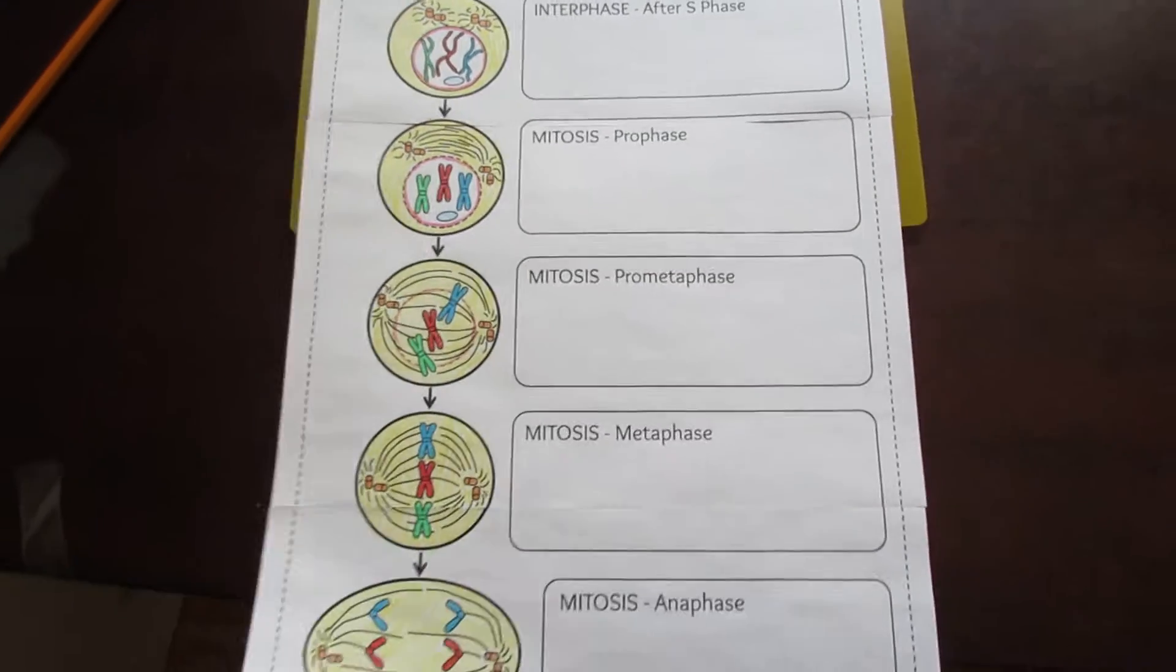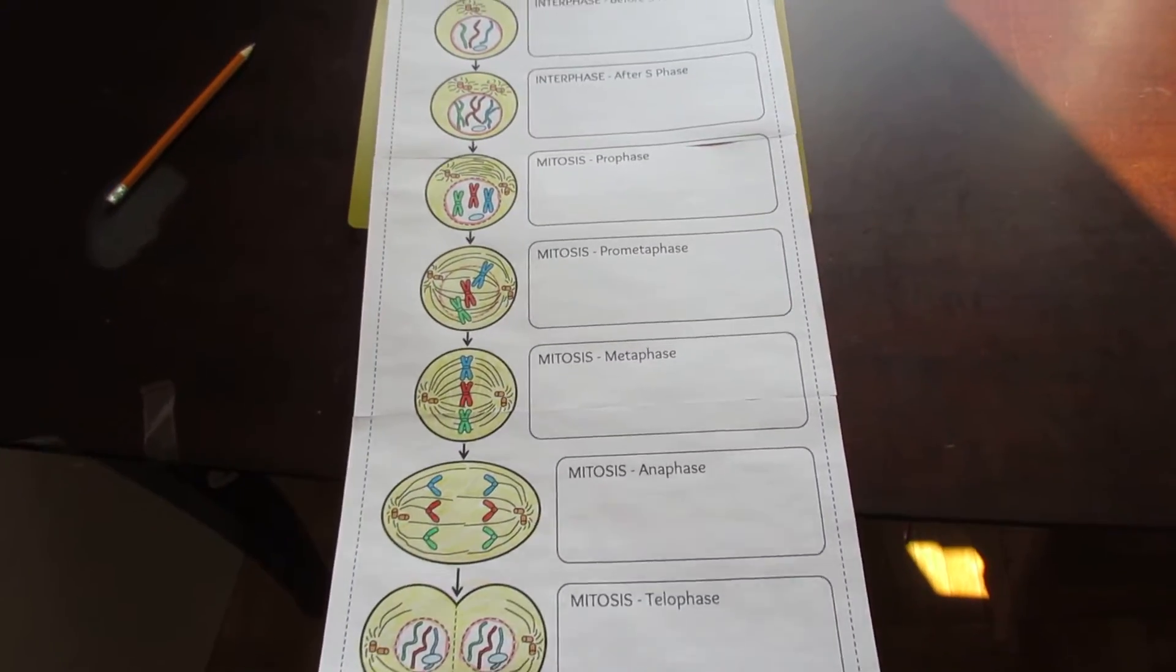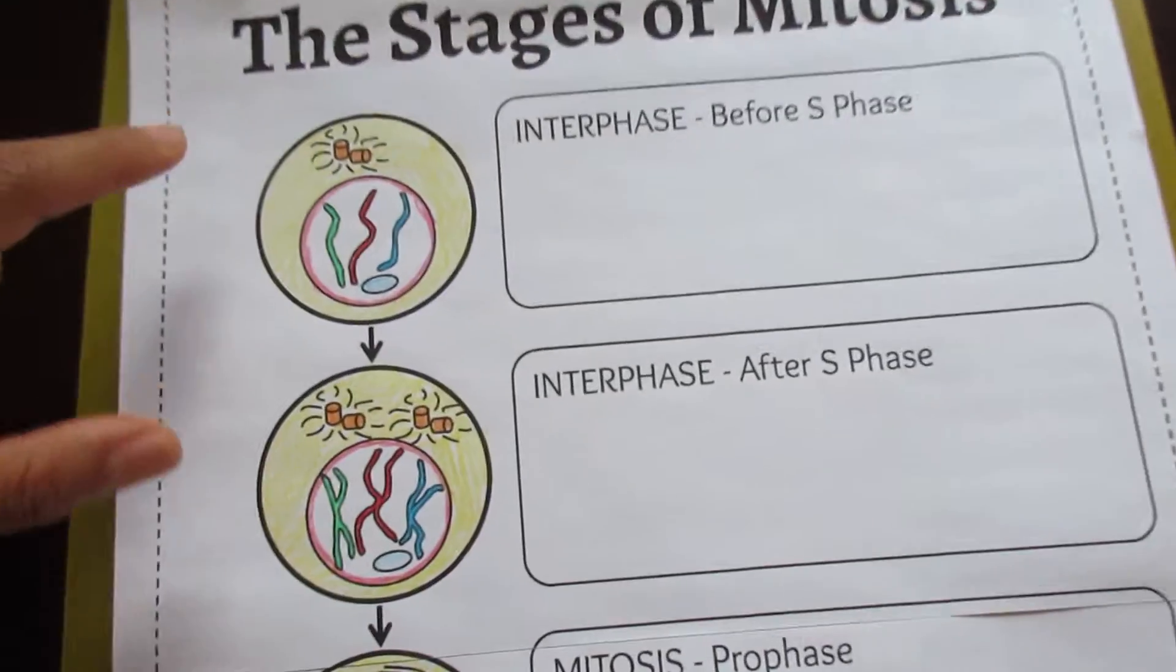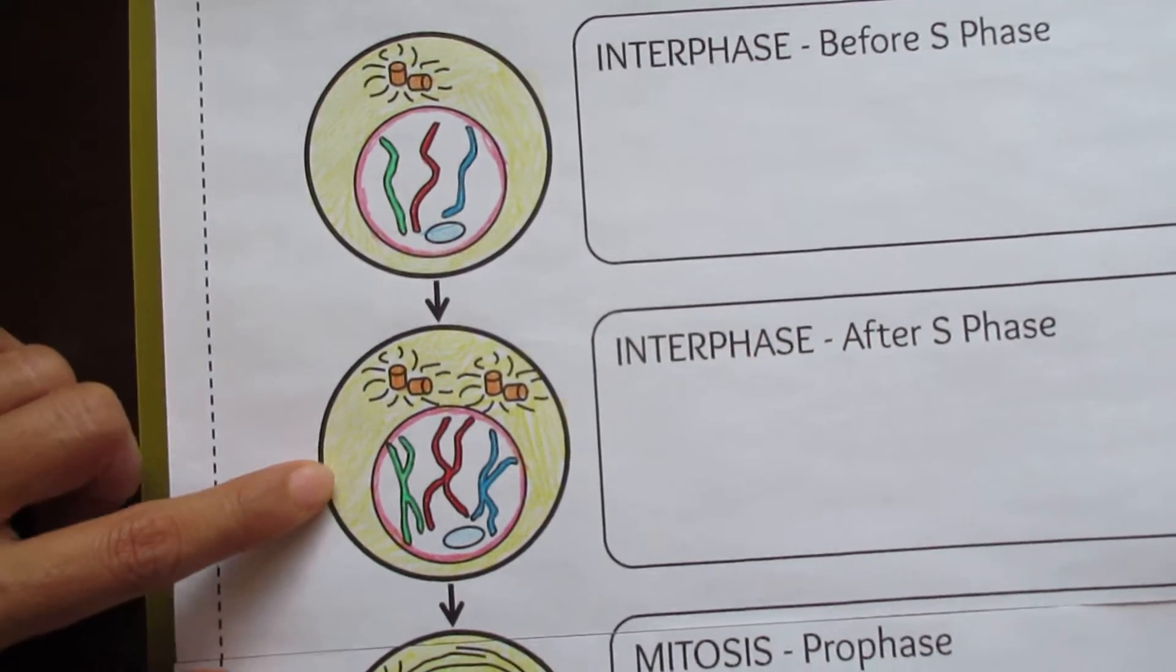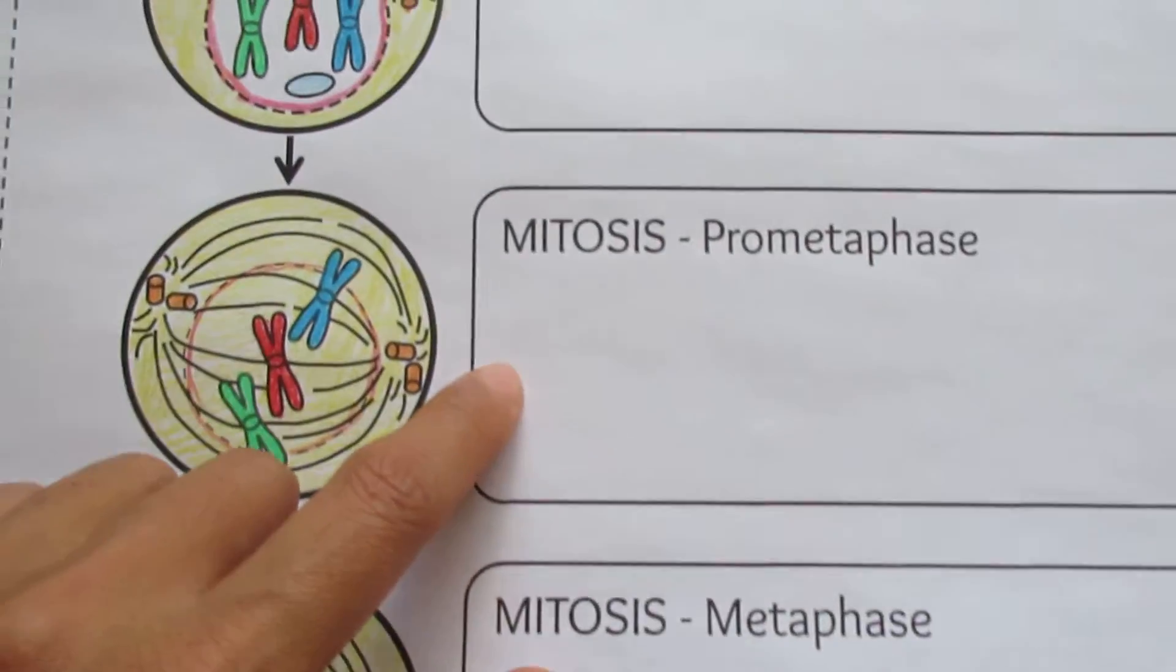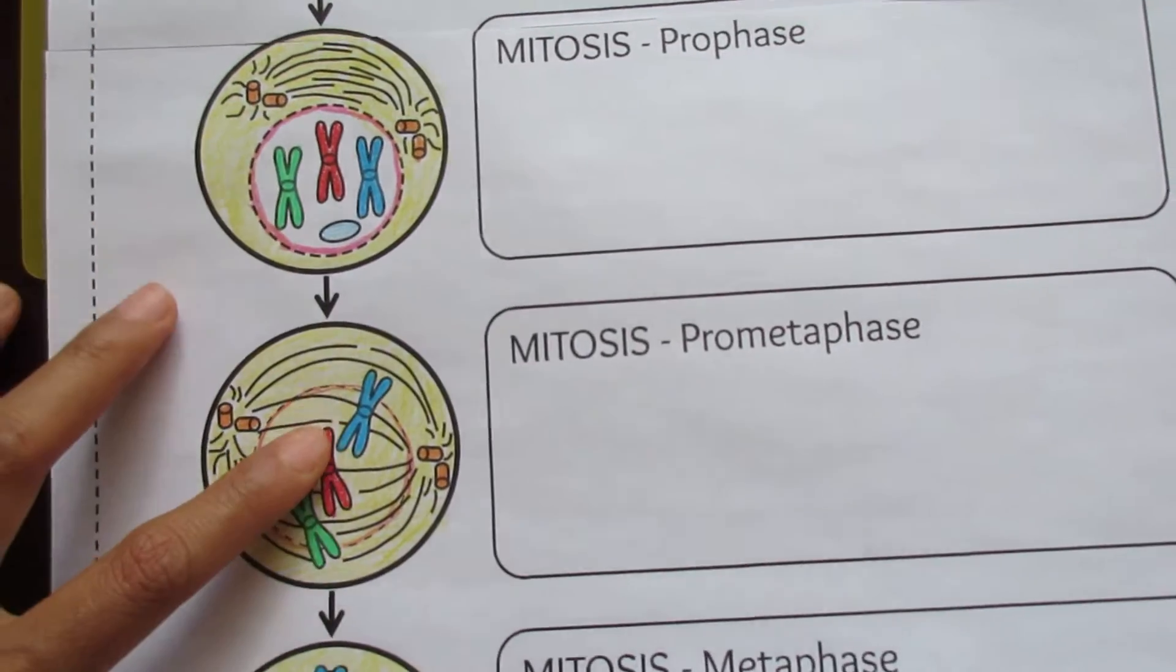I provided three options for this foldable. This one's the most comprehensive, and what it includes is interphase before and after DNA replication, and it also includes prometaphase. So this one is the most comprehensive.